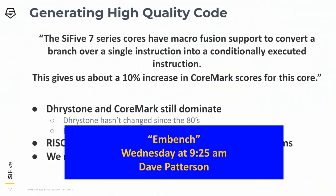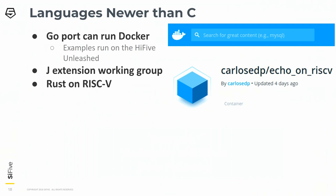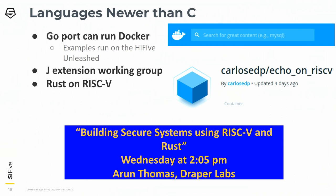For the longest time we were focused on C and C++, but with the Linux boards and the large ecosystem starting to come out, we recently started getting other languages up and running. Just about a week ago we got Docker, which uses Go, up and running on the HiFive Unleashed dev board, and there is a single RISC-V Docker image on Docker Hub right now. In Java land, we have the J extension working group starting to bring up work on Java ports. Rust has also started to come up on RISC-V, and Arun, who co-chairs the software working group with me, has a talk about Rust on RISC-V later today.